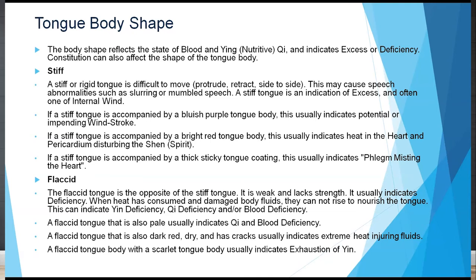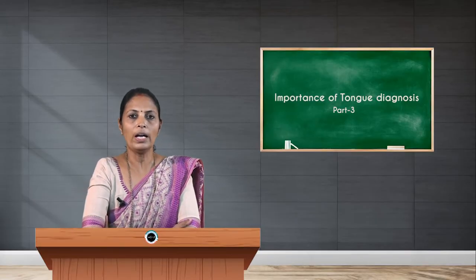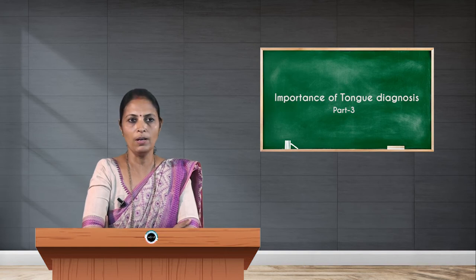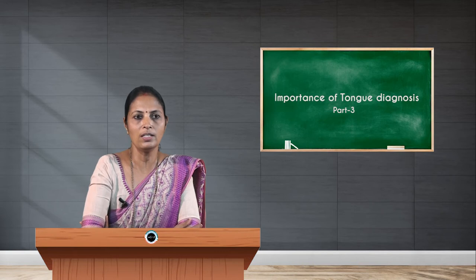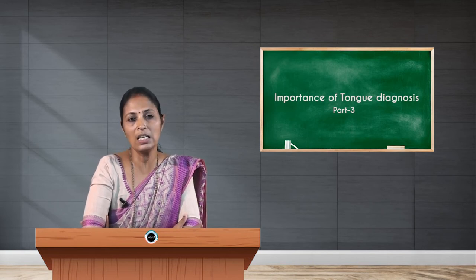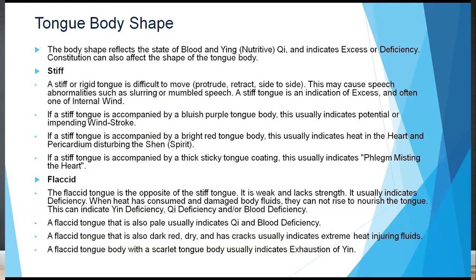A stiff tongue is an indication of excess or internal wind. If the stiff tongue is associated with a purple body, it indicates potential or impending wind stroke. If accompanied by a bright red tongue body, it indicates heat in the heart and pericardium disturbing the spirit. A thick sticky coating with a stiff tongue indicates phlegm overwhelming the heart.